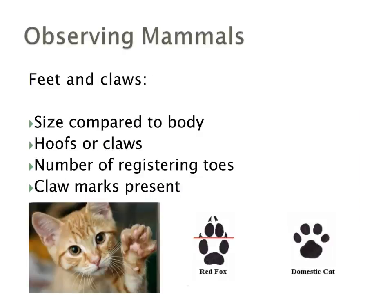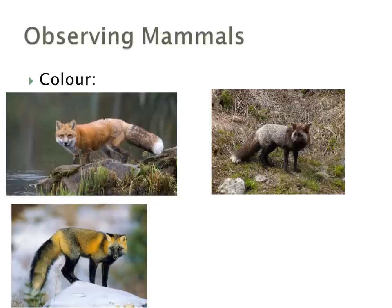One of the things we also look for is mammal signs and tracking, but understanding the structure of feet and claws is also important. Does it have a hoof or a claw? That's a good identifier. The number of toes that register with the ground, and whether claw marks are present or not, are unique things that allow us to identify down to a species level.